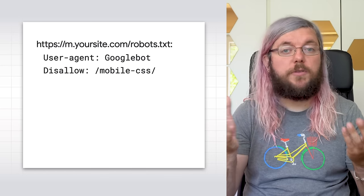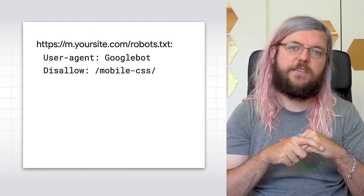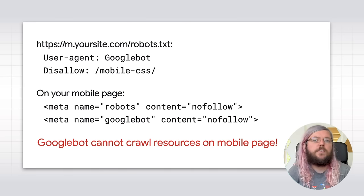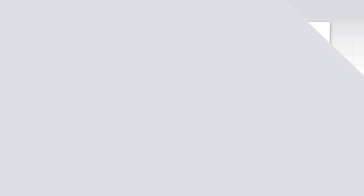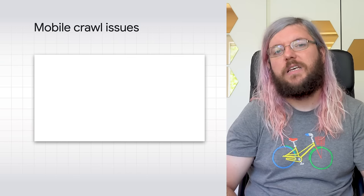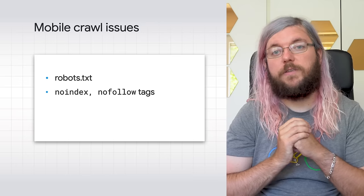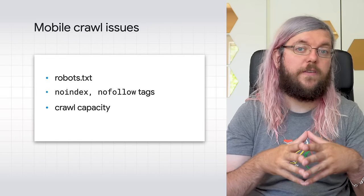For another example, if you put the following rule in robots.txt under your resources host, it tells Google not to crawl any files under mobile-css. If you add any of these meta tags on the mobile pages, they would tell Googlebot not to follow any of the links on these pages. Those settings will prevent Googlebot from crawling the resources. If you let Googlebot crawl resources for your desktop page, you should probably also let it crawl them for your mobile page. Otherwise, it cannot understand your mobile page as well as your desktop page. To conclude for mobile crawl issues, you need to check your robots.txt files, and you also want to be careful with noindex and nofollow tags. Please also check if your hosts have enough crawl capacity to handle as many mobile crawls as they handle desktop crawls.